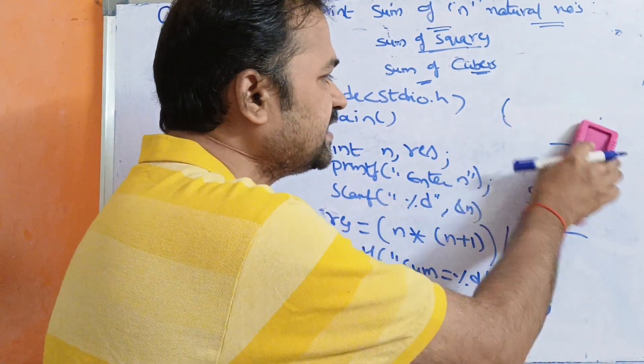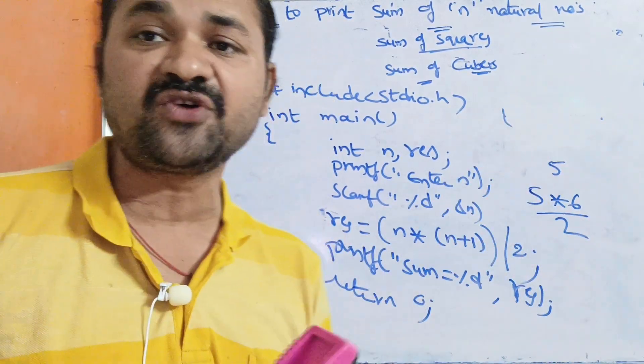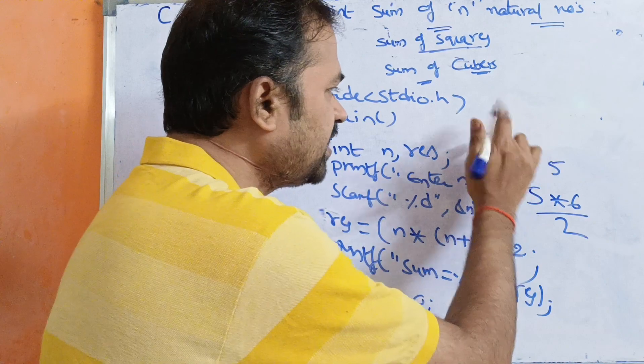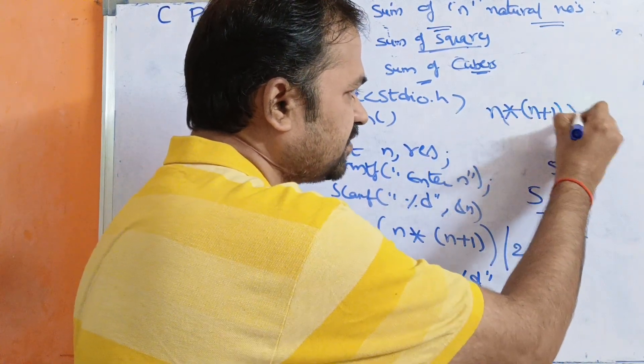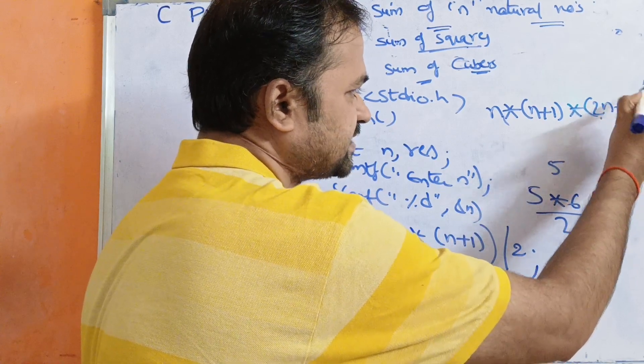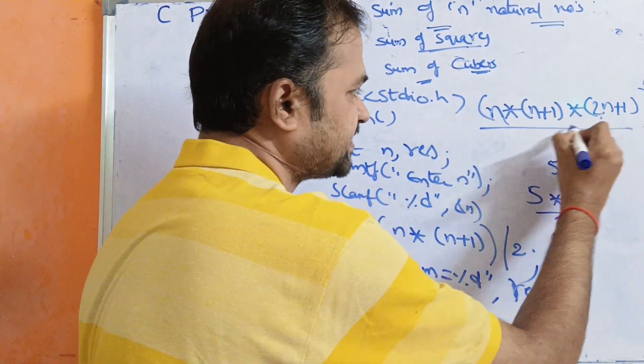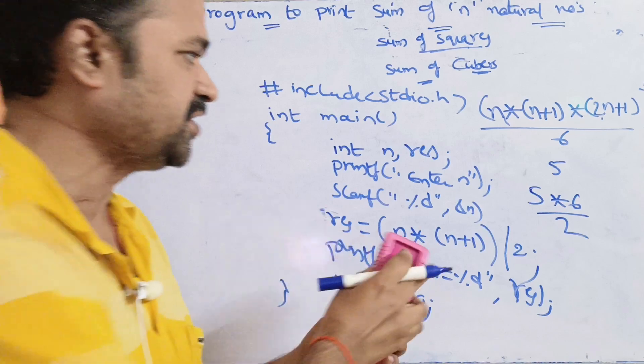The formula is n into (n+1) into (2n+1) by 6. So this is the formula.